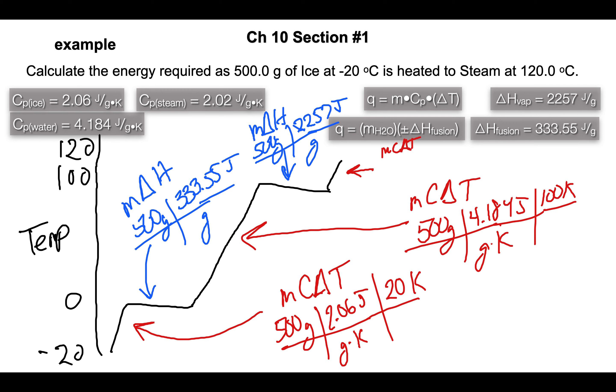Again we're using MCΔT and we still have our 500 grams. Our Cp of steam now is 2.02 joules per gram per Kelvin and our temperature change - we went from 100 to 120.